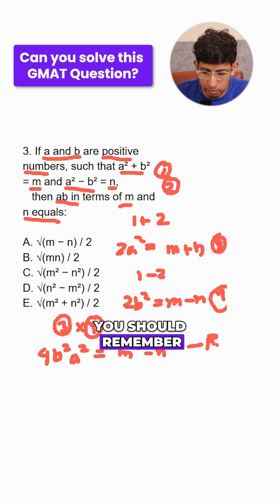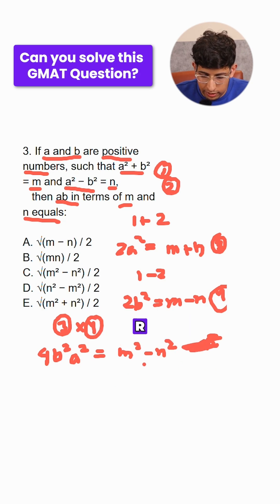That is the trick you should remember. What we can do here is recognize that 4a²b² is the square of 2ab, right? So we have (2ab)² = m² - n². We can take the square root of both sides.